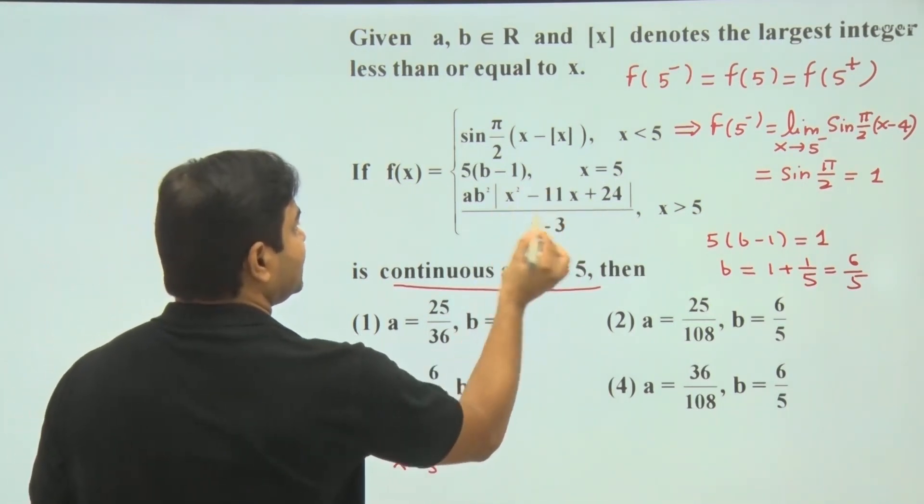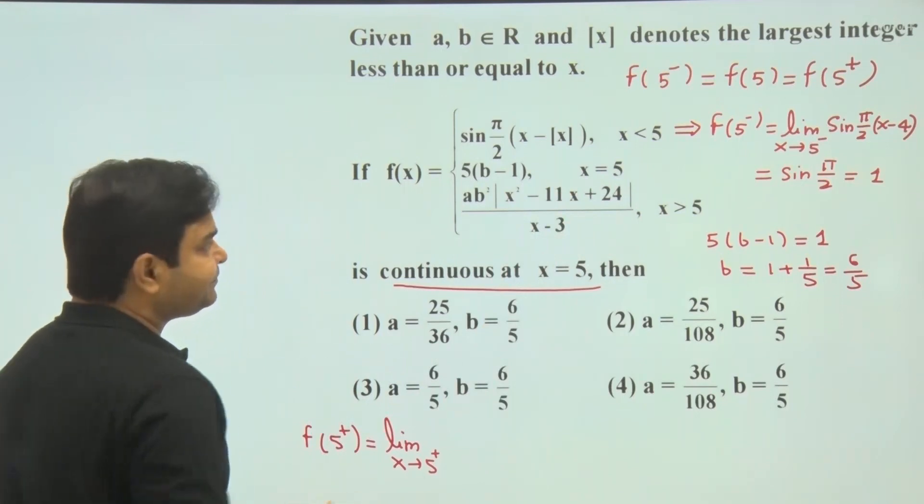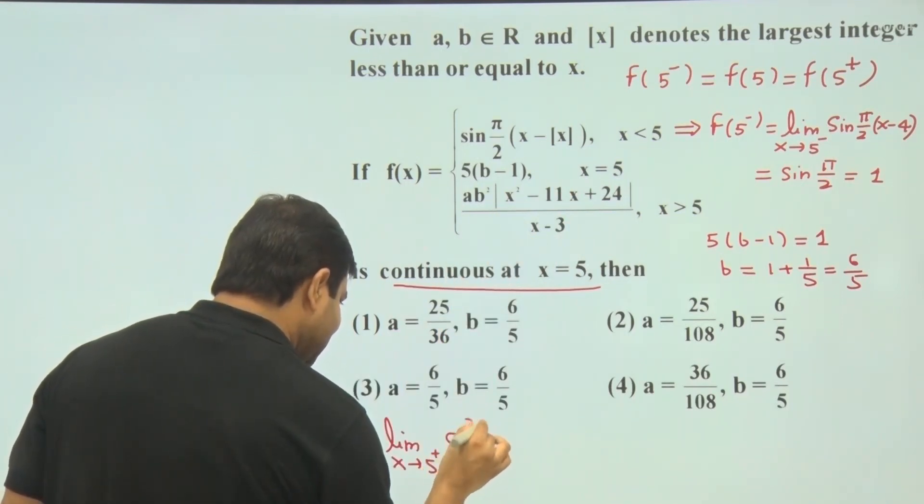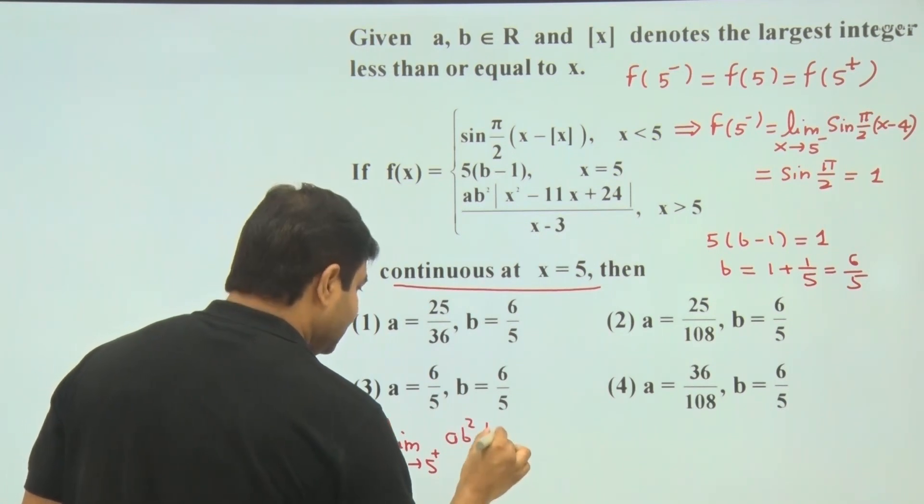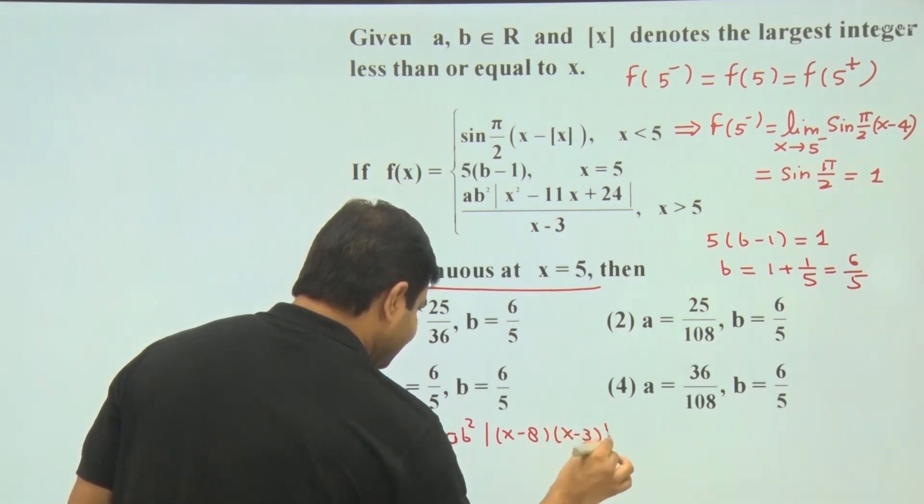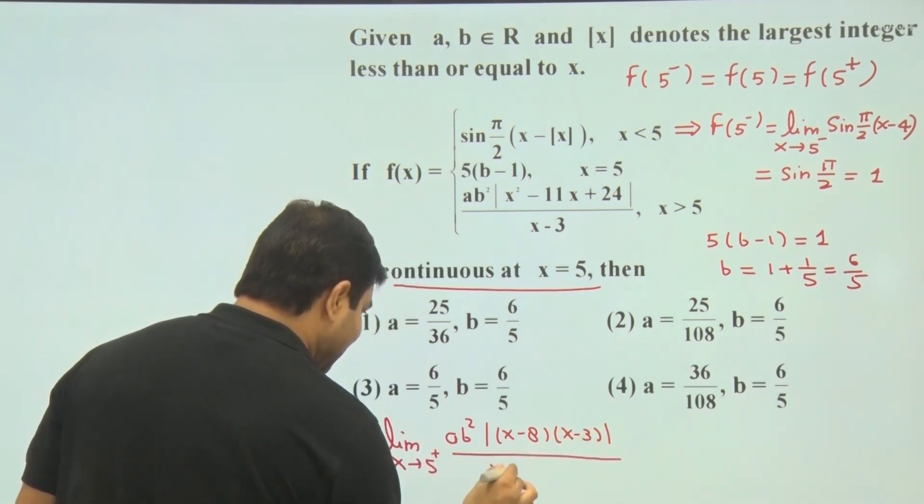Now simplify this quadratic. We have to factorize this. So this is ab², modulus of factors are (x minus 8) times (x minus 3). Denominator is x minus 3.